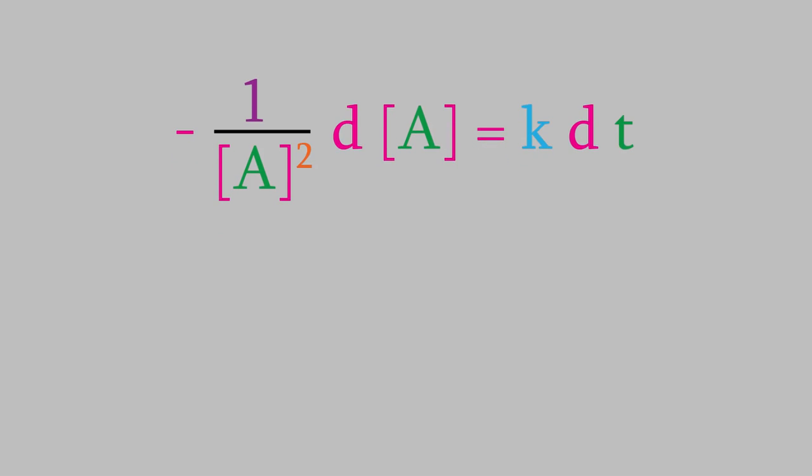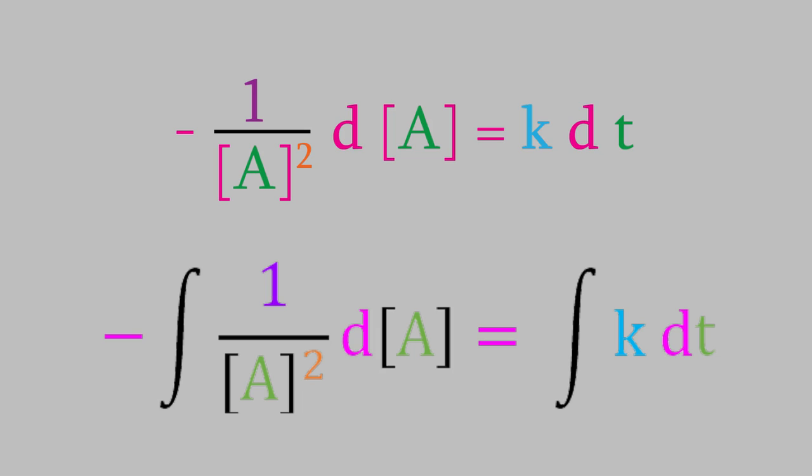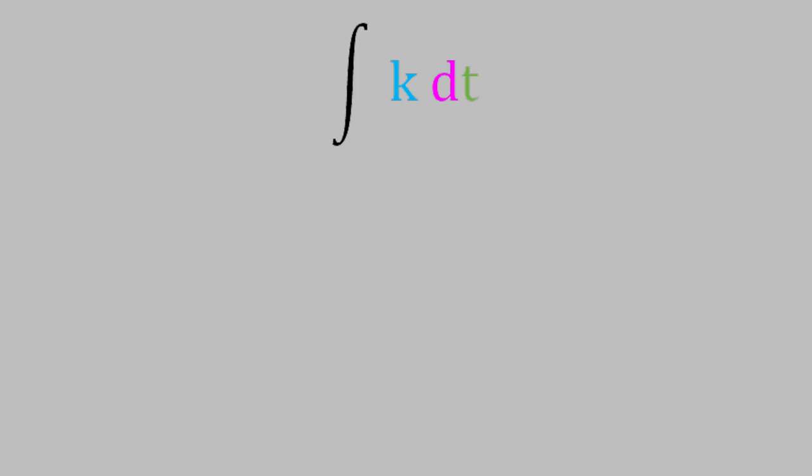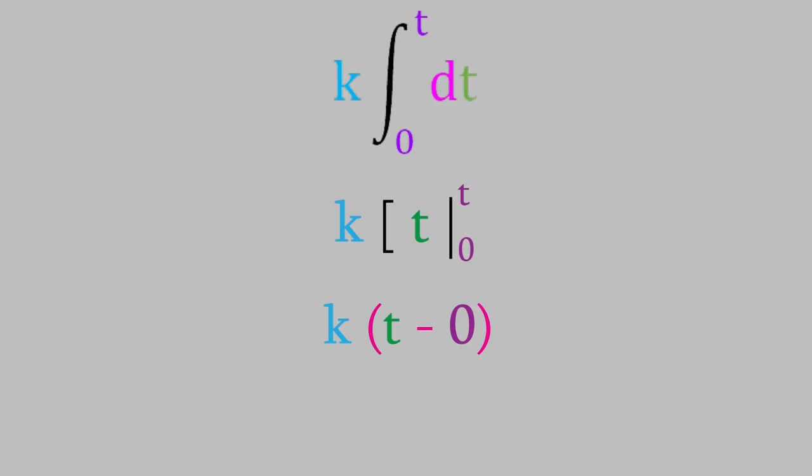Our next job is to get rid of the derivatives by integrating the equation — we integrate each side separately. I'll do the right side first. On the right, we have k times dt. The limits of integration are the beginning and ending times: time zero as the lower limit and time t as the upper limit. k is a constant, so we pull it out of the integral. The integral of dt is just t, and applying the limits gives us t minus zero, or just t. So the right side equals kt.